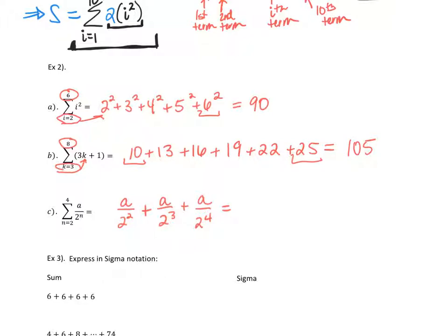For the last one, a is just a constant, so I could pull a out — it's not changing at all as I add things, similar to pulling out the 2 earlier. I could rewrite it that way, then get a common denominator to see how it all relates: a/4 plus a/8 plus a/16. With a common denominator of 16, that gives 7a over 16.